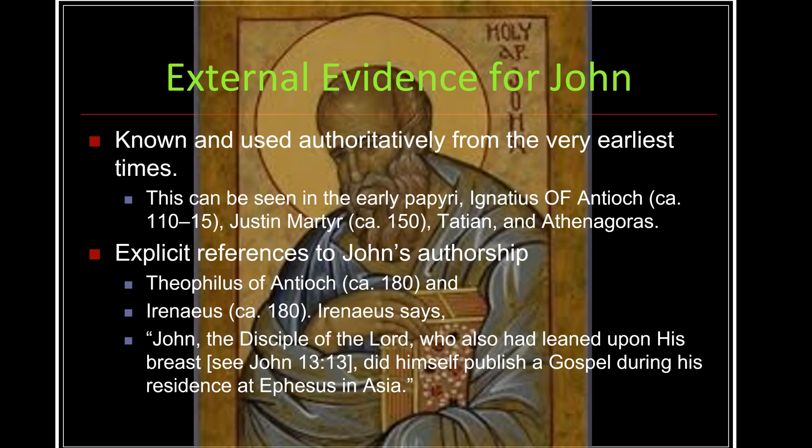The external evidence further supports this conclusion. The Gospel of John was known and used authoritatively from the very earliest times. This can be seen in the early papyri of Ignatius of Antioch around 110 AD. In addition, Justin Martyr in 150, Tatian, and Athenagoras all attest John as the author. Explicit references to John's authorship of the fourth gospel are also found in Theophilus of Antioch and Irenaeus. Irenaeus actually says, 'John the disciple of the Lord, who also had leaned upon his breast' — that's in John 13 — 'did himself publish a gospel during the residence at Ephesus in Asia.'